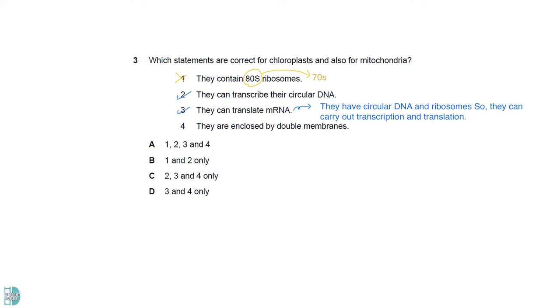Since they both have DNA and ribosomes, they can carry out transcription and translation. They have inner and outer membranes, so 4 is correct as well. The answer is C.